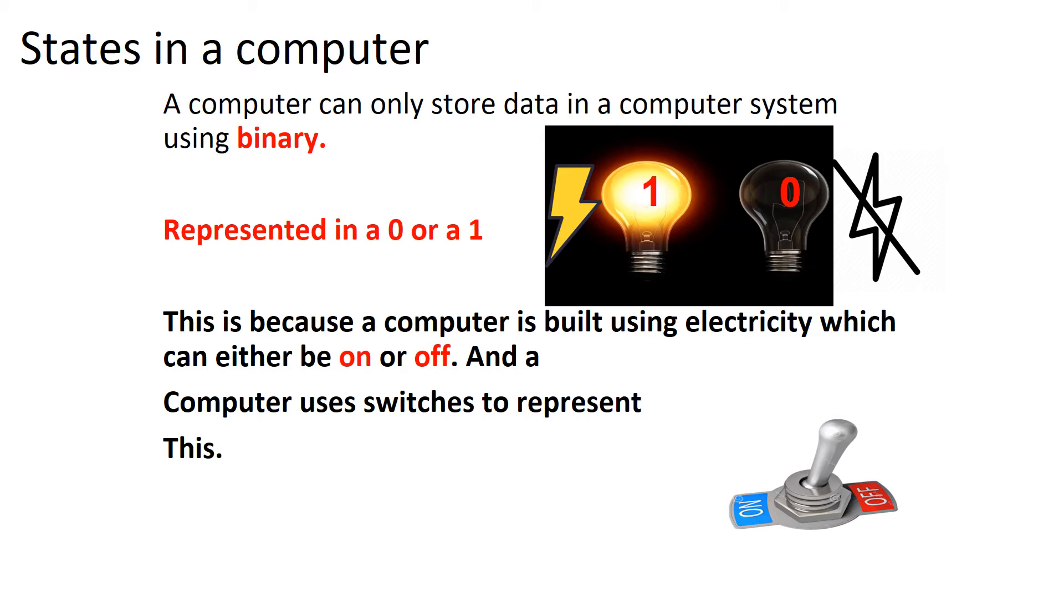Everything in a computer is represented with either a 0 or 1. This represents an on or an off. A computer can actually only store data using binary. This is because it's built using electricity and that can either be an on or an off.